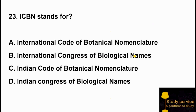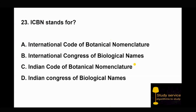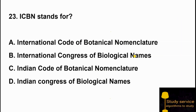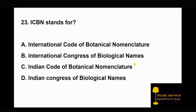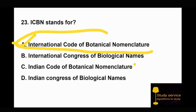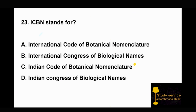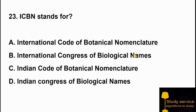Question 23: ICBN stands for? Option A: International Code of Botanical Nomenclature. Option B: International Congress of Biological Names. Option C: Indian Code of Botanical Nomenclature. Option D: Indian Congress of Biological Names. Option A is the right answer — ICBN stands for International Code of Botanical Nomenclature, which covers plants. ICZN stands for International Code of Zoological Nomenclature, which covers animals.